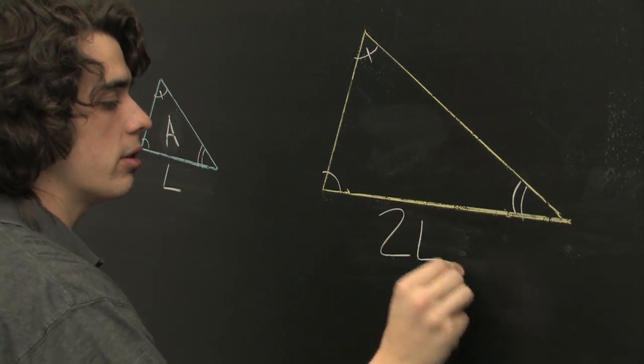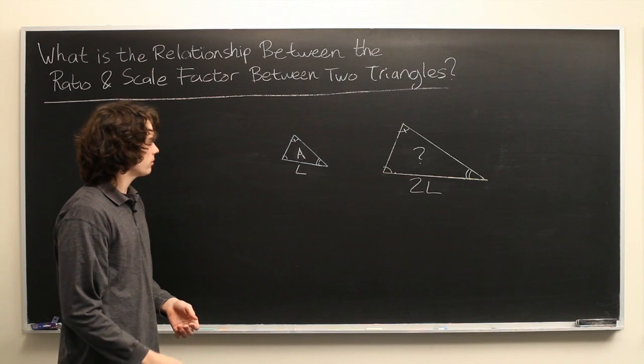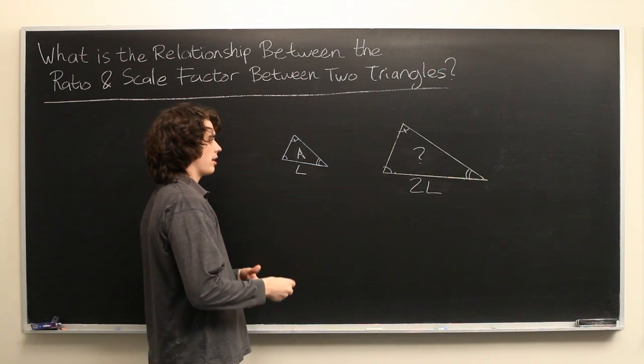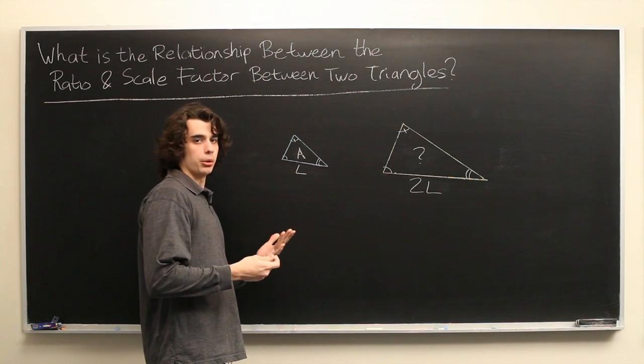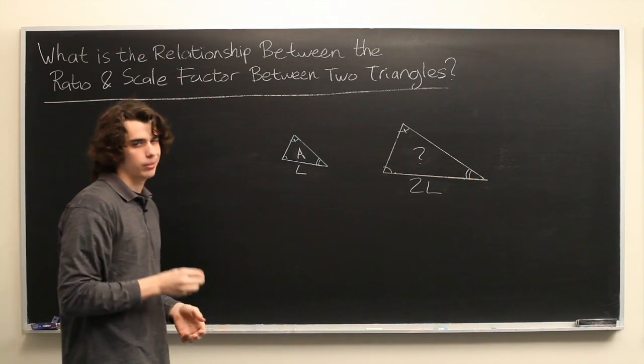The question is, what happens to the area if we double the side length? And what you might think is that the answer is simply the area is doubled. Side length doubled, area doubled. Seems simple enough, but it's not quite true.